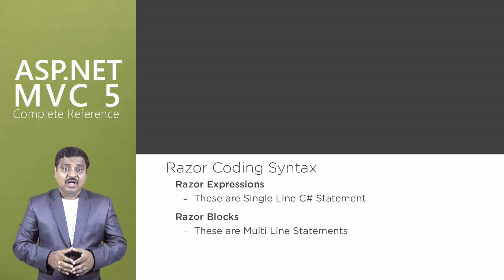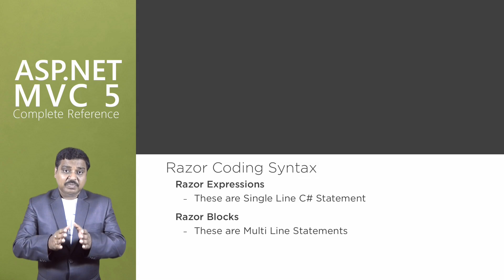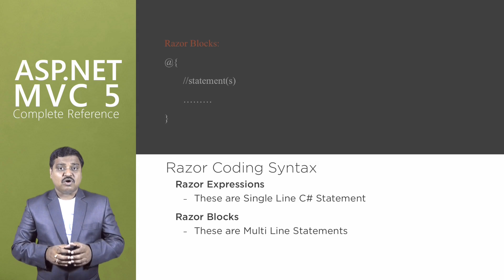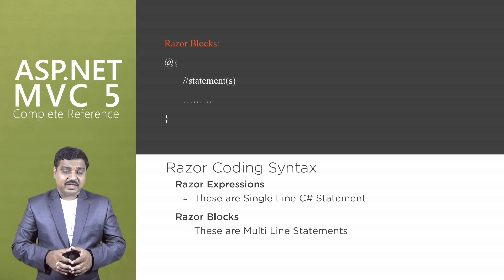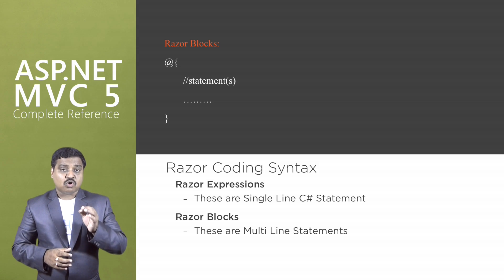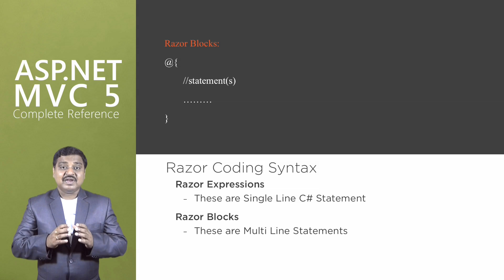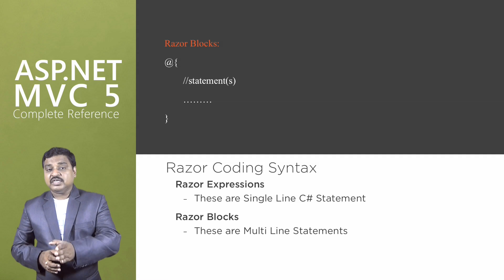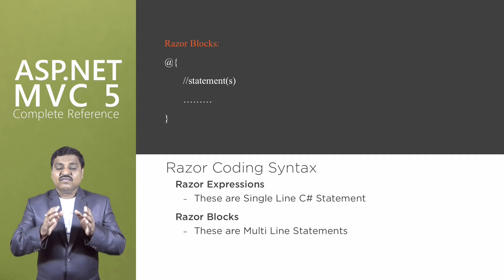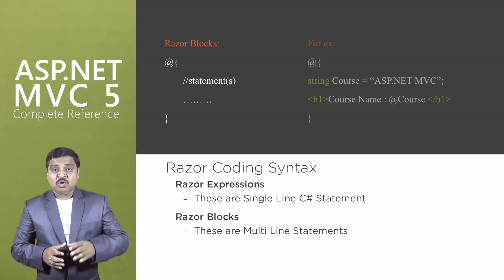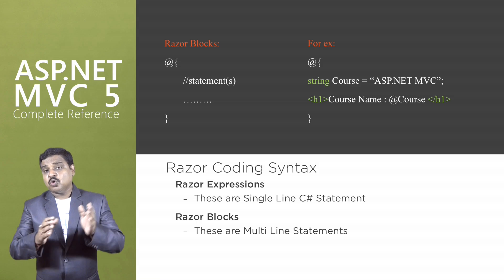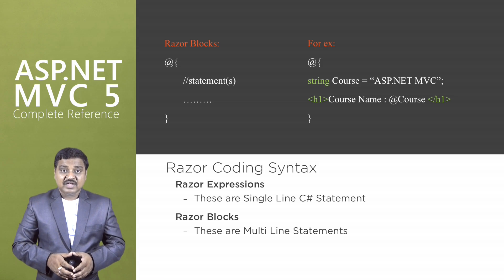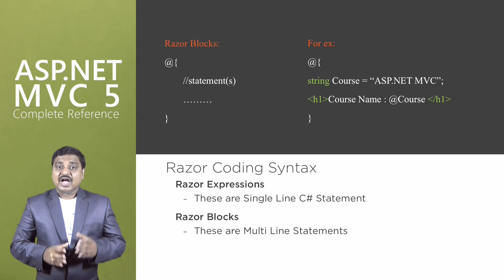The second way is Razor blocks. Whenever we want to process multiple lines of C# code, we need to use Razor blocks. To use a Razor block, we use an at symbol followed by flower brackets. The Razor block code can have a combination of C# statements and HTML code, and the Razor engine is capable of identifying what is HTML and what is C# coding. For example, to define a variable with a default value: @{ string course = "ASP.NET MVC"; }, and then to display it as a heading: <h1>@course</h1>.